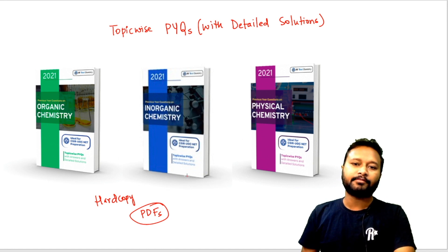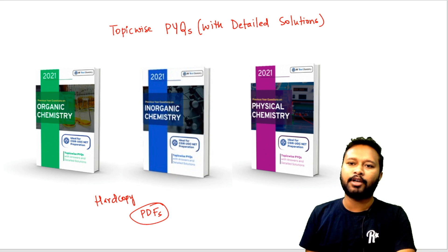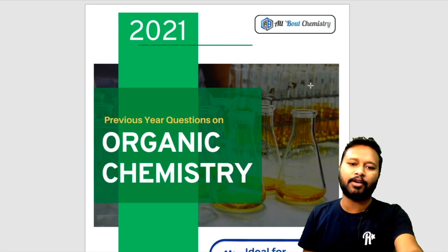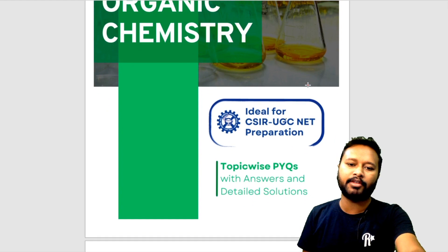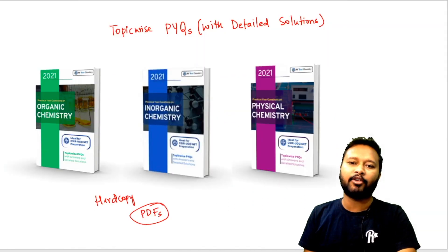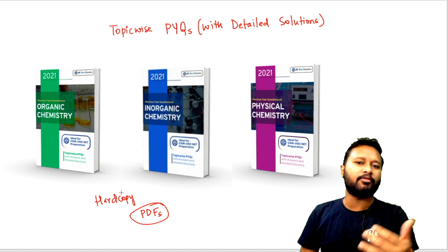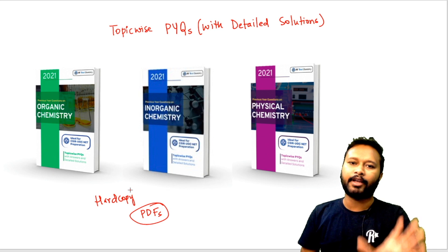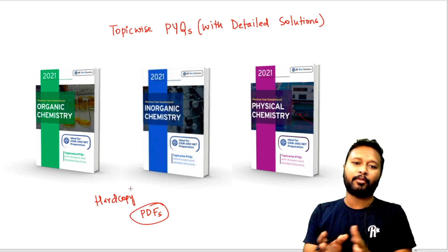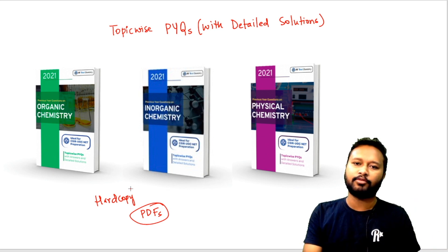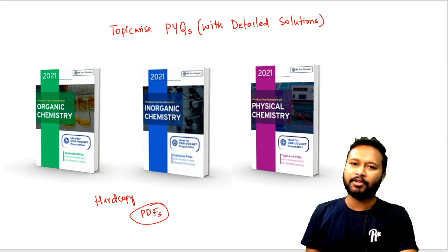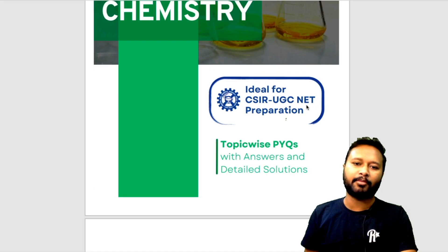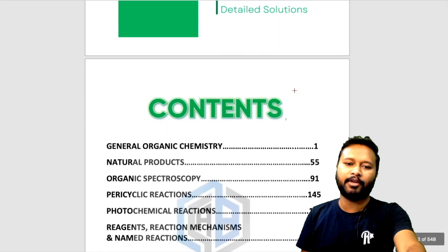Let me quickly show you how this looks. If you are a fan of hard copies, you can take a printout of all these PDFs — they are already in a printable format, so you just have to print them out and use them however you want. Now, coming back to this — this is the organic chemistry file.